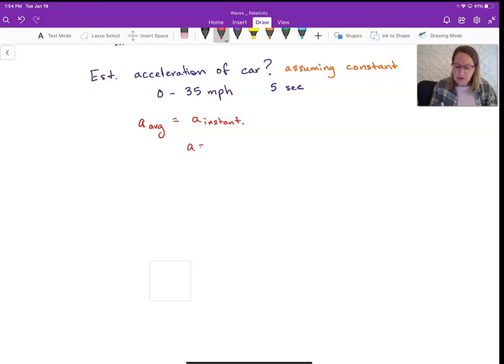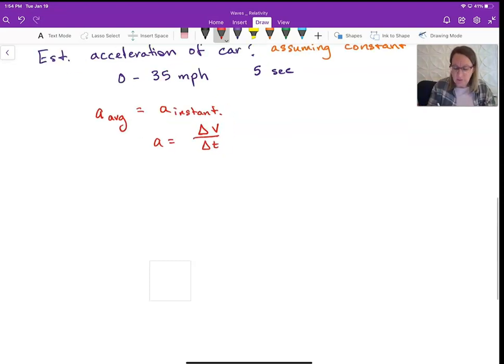So our acceleration is the change in velocity over the change in time. And this is just looking for the magnitude. So we could say it would be in the i-hat direction, but what we're really interested in is the magnitude of this. Magnitude with what looks like the absolute value sign. So that's just the size or the scalar that's associated with that.